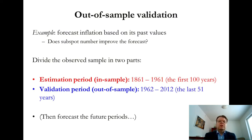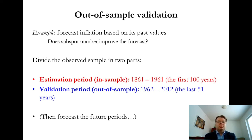I will illustrate this forecasting using the application of inflation forecasting, using the inflation series of Finland that we considered before. For any type of predictive analytics, an important concept is the so-called out-of-sample validation. When doing this kind of forecasting, it is important to divide our time series into two parts — indicated here by red and blue color. The first period, called the estimation period or in-sample data, is the dataset used for estimating the parameters of the model. In the AR1 model, those would be the drift parameter mu and the autoregressive coefficient rho.